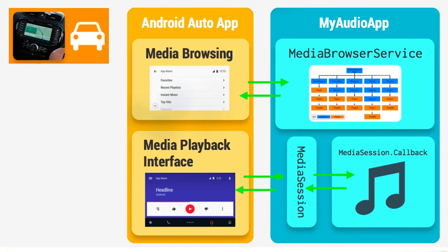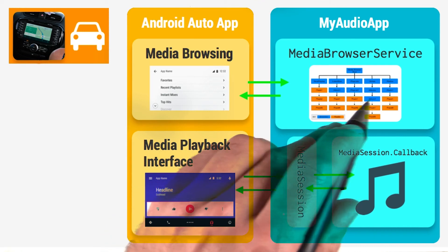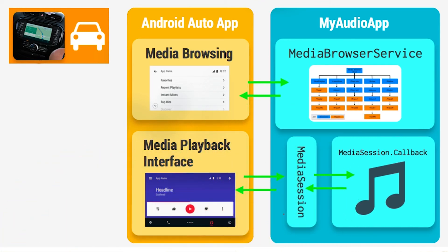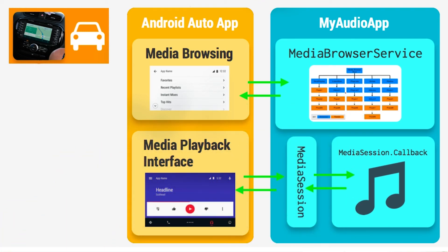Your app also implements a media session, which tracks the current state of what your app is playing. You implement a media session dot callback to get notified of when the user selects a new song or when the playback controls are pressed. The Android Auto app connects to your media browser service and queries it to get the tree structure of your app's music library.